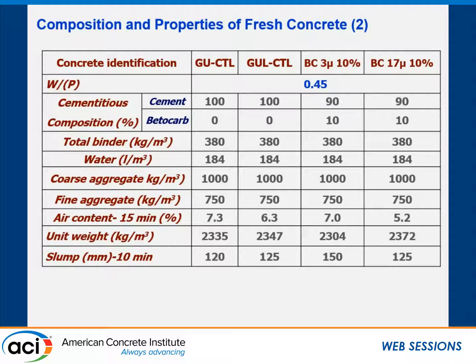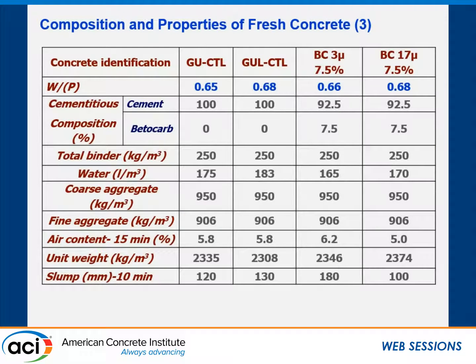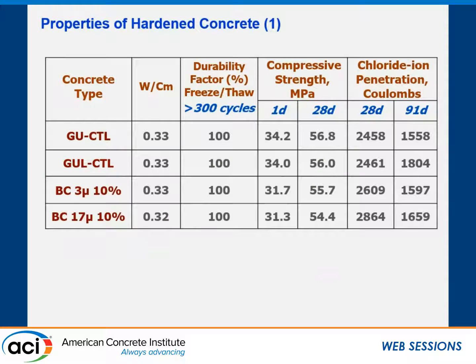At 0.45 water-to-cement ratio, workability was similar with the 10% replacement. At 0.65–0.70 water-to-cement ratio, slumps are again within plus or minus one to one-and-a-half inches and air content is similar. The only case where he had to reduce water slightly was with the 3-micron product — it became so fluid it exceeded his target slump.